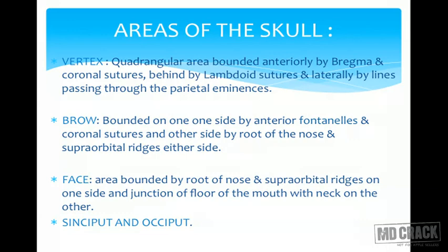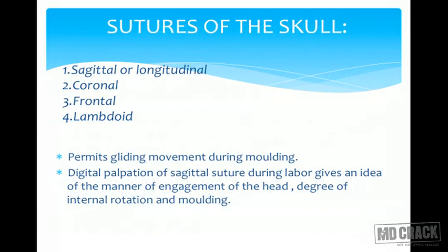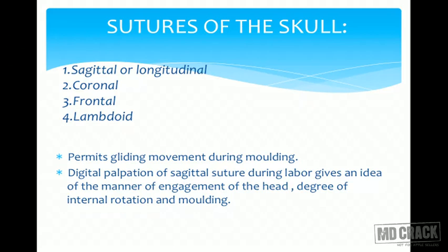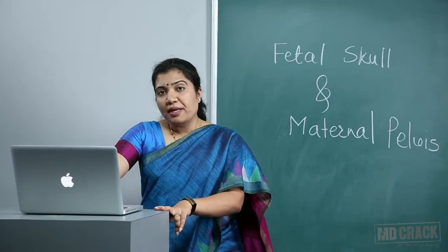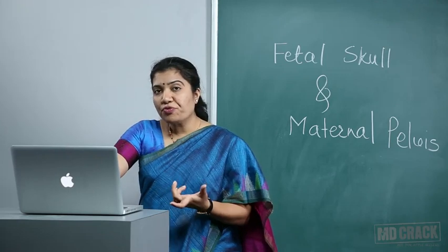Sinciput is in front and occiput is behind. Important sutures of the skull are the sagittal (longitudinal), coronal, frontal, and lambdoid sutures. These sutures are gaps between flat bones and allow gliding movement during molding. During PV examination in labor, palpation of fontanelles and suture lines tells us whether engagement has occurred, the degree of internal rotation, and degree of molding. The anterior fontanelle is called bregma and the posterior fontanelle is called lambda.